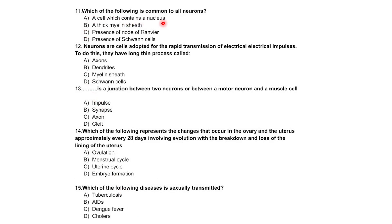Which of the following is common to all neurons? A cell which contains a nucleus, a thick myelin sheath, presence of node of Ranvier, or presence of Schwann's cell. The correct answer is A — a cell which contains a nucleus — as that is common to all neurons.